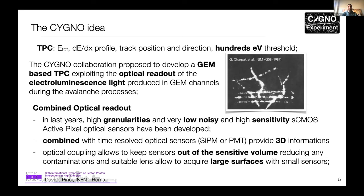Rather than reading out electrical charge, CYGNO uses a TPC based on gas electron multipliers for the amplification stage but exploits optical readout — reading the electroluminescence light produced by the gas during multiplication in the GEM channel. This is advantageous because modern commercial scientific optical sensors now offer very high granularity — a million pixels each sensitive to single photons. Combined with time-resolvent optical sensors such as SiPMs or PMTs, this provides a complete set of 3D information about the event.